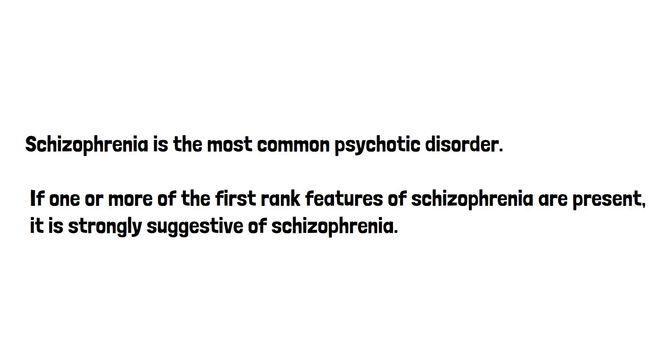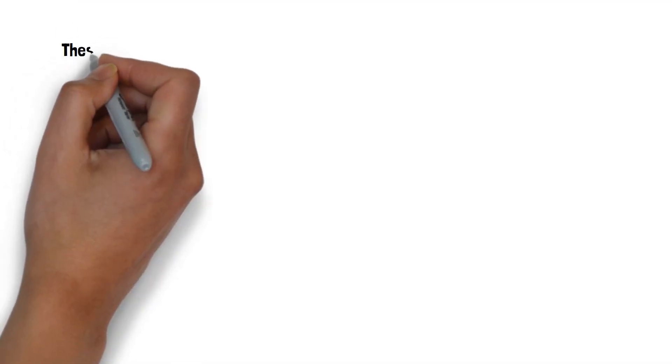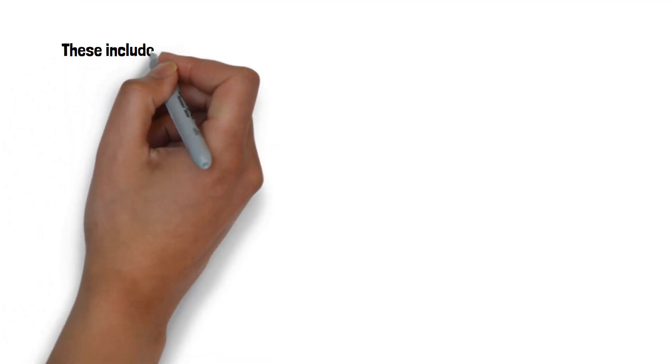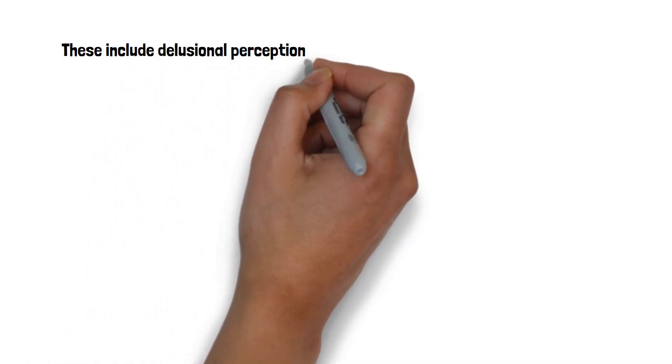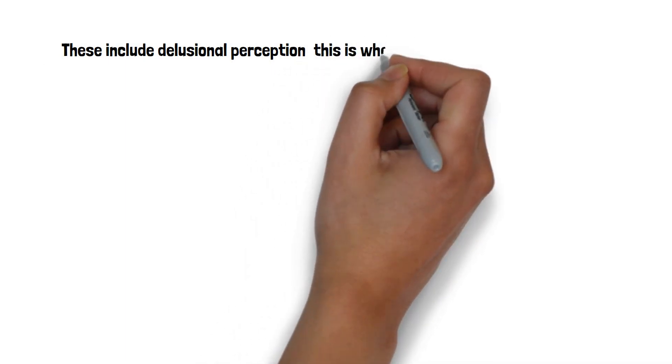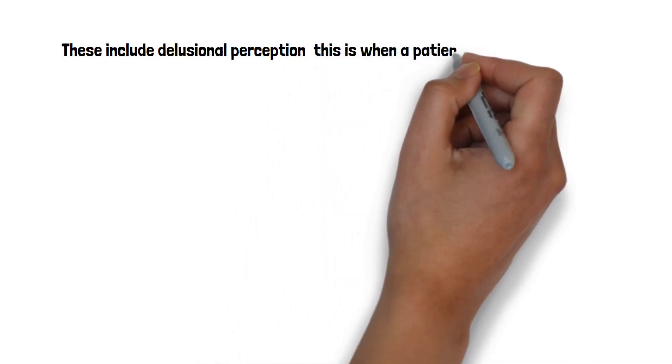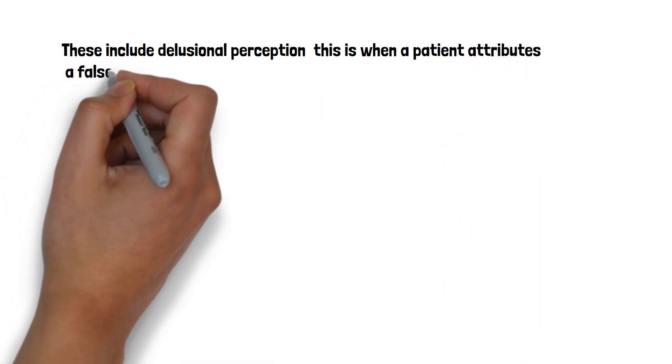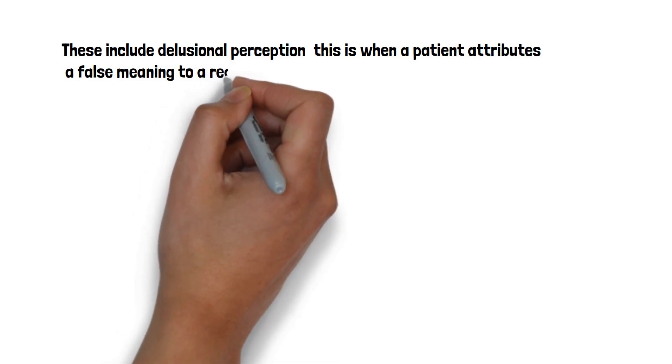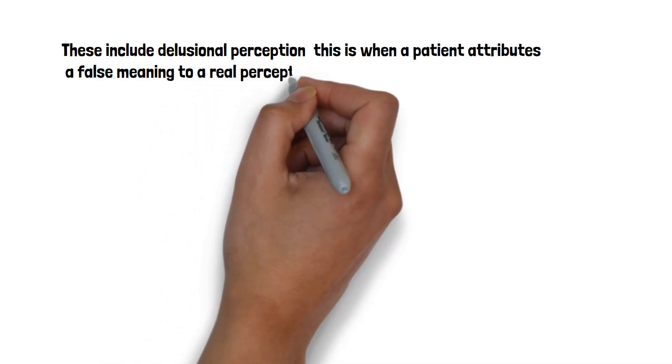They include delusional perception. So this is when a patient attributes a false meaning to a real perception. In this case the phone did ring during the clinic but the patient had the delusional perception that by the phone ringing it meant he was the chosen one. And delusional perception is very consistent with schizophrenia.